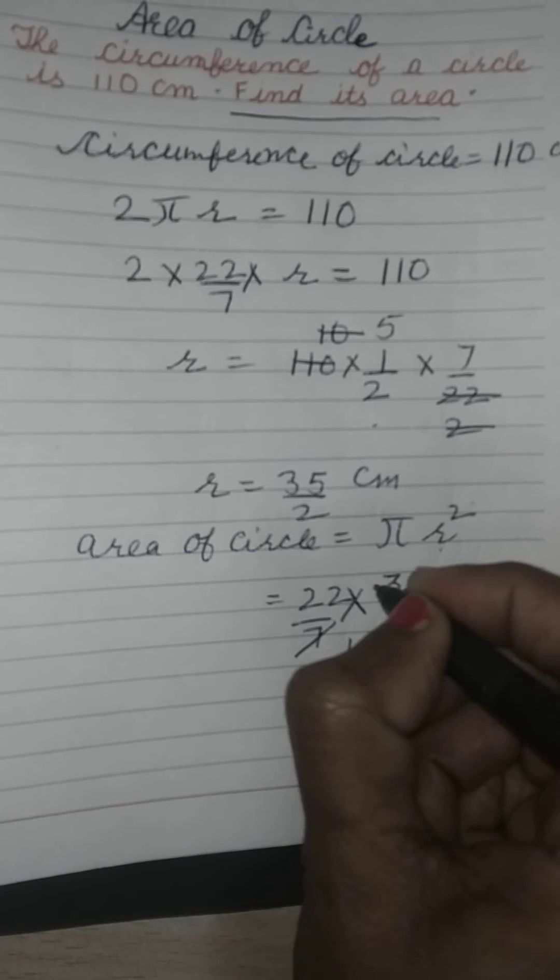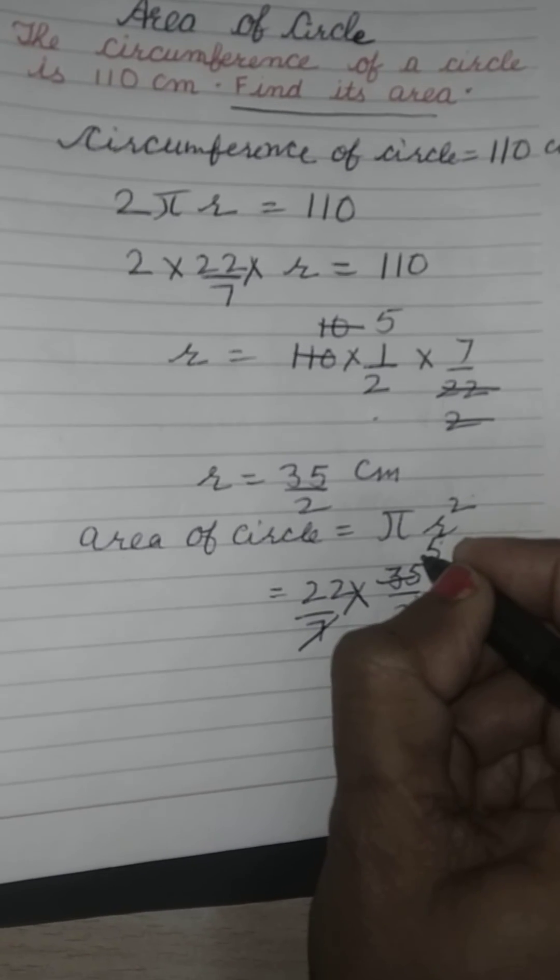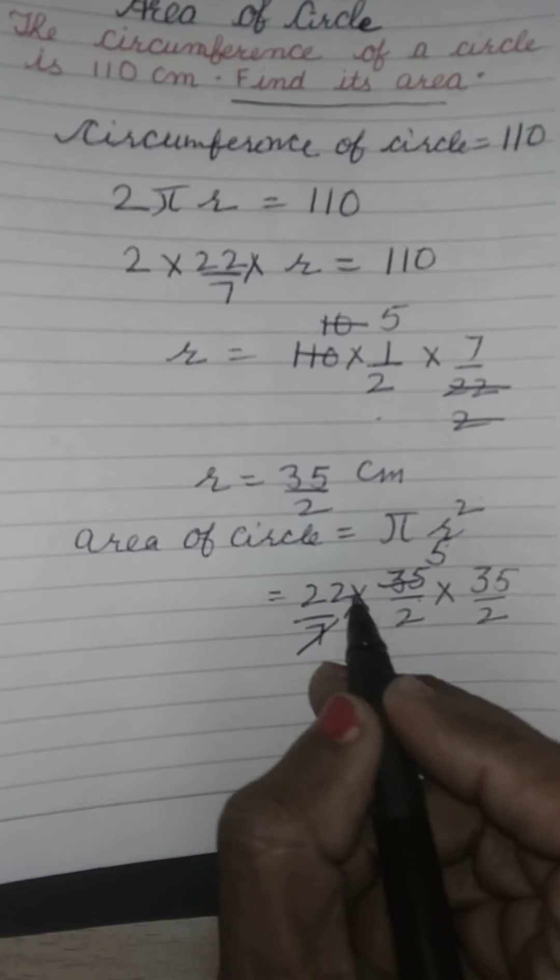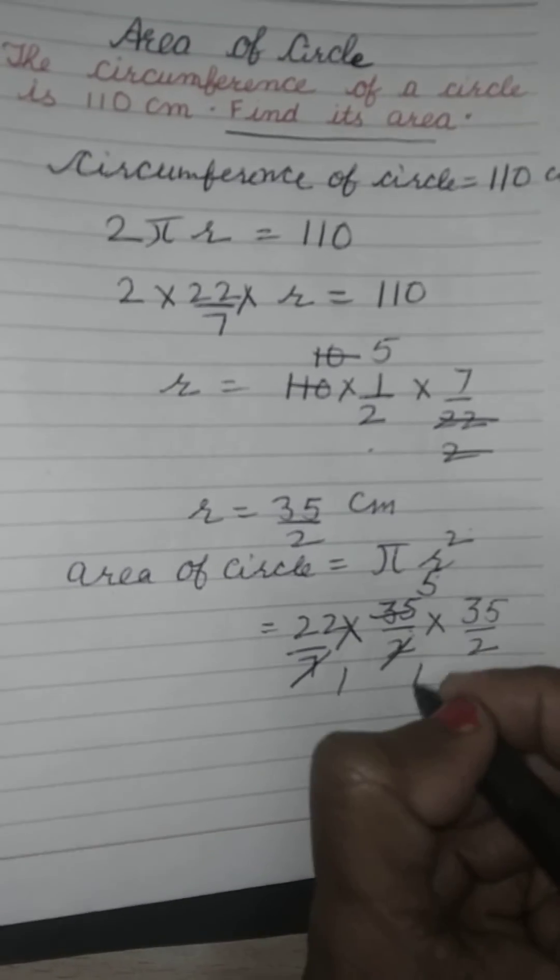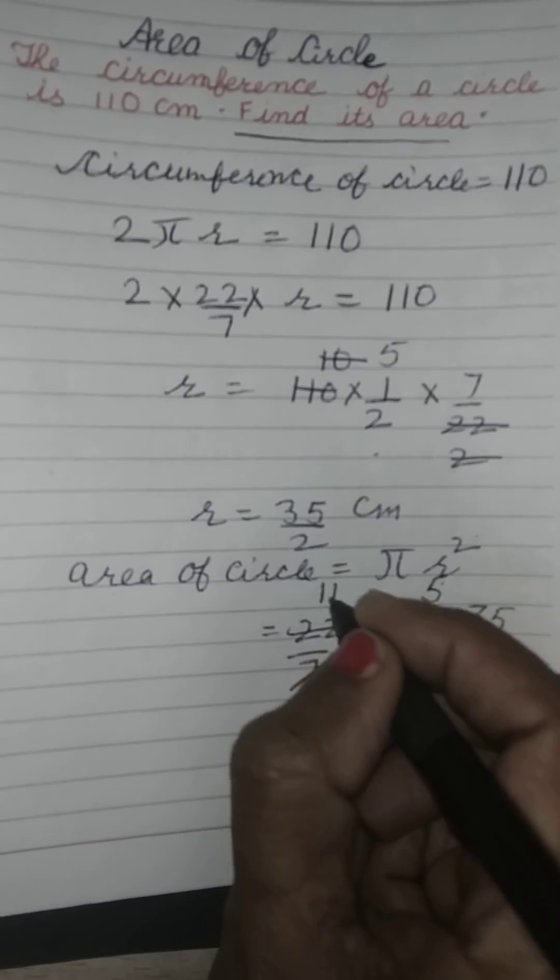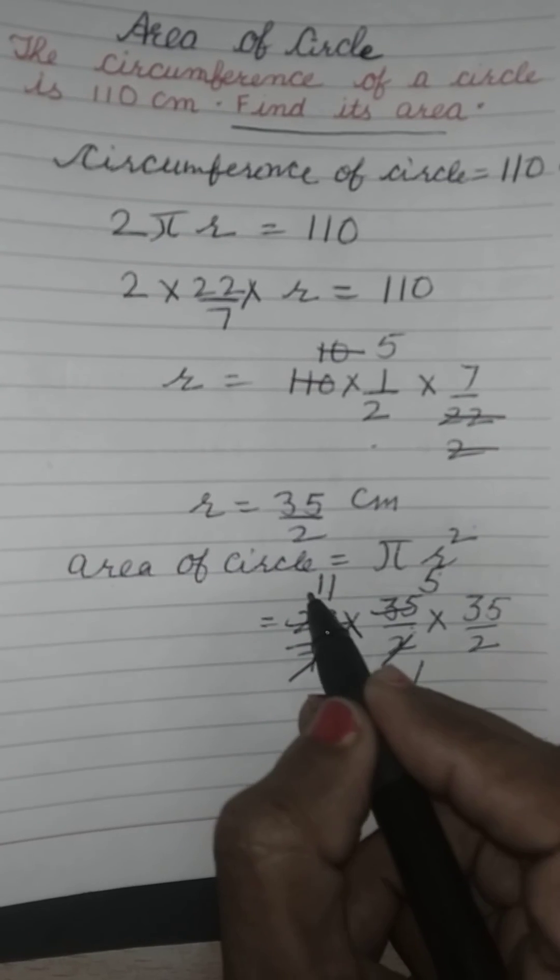Simplifying the calculation: 35 divided by 7 is 5, 22 divided by 2 is 11, then 11 times 5 is 55.